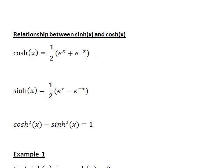The standard definition of cosh(x) is a half times e to the x plus e to the negative x, and sinh(x) is a half times e to the x minus e to the negative x. A useful identity that relates them is that cosh squared x minus sinh squared x equals 1.